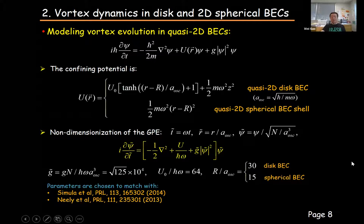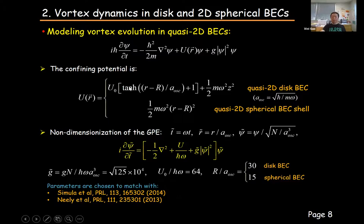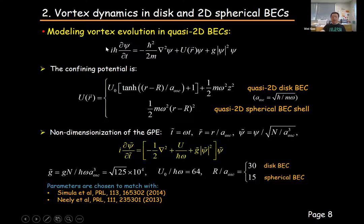To study the vortex dynamics in BEC, we conducted numerical simulations using the three-dimensional Gross-Pitaevskii equation. To create quasi-2D BEC in both the disk geometry and spherical shell geometry for comparative study, we adopted confining potentials reported in the literature. For the disk BEC, the BEC is tightly confined in the z direction, and in the xy direction we have a hypertension potential, so the BEC is confined with a radius R. For the spherical BEC shell, the BEC is tightly confined to a radius R. We non-dimensionalized the Gross-Pitaevskii equation and chose interaction and potential parameters to match existing simulation and experimental work. We also chose the radius of the disk BEC and the spherical BEC such that their surface areas are exactly the same.